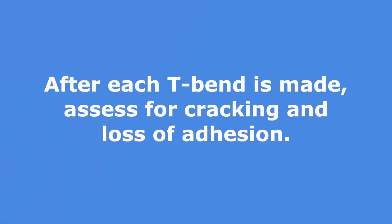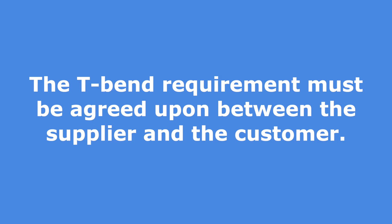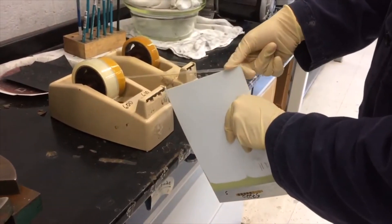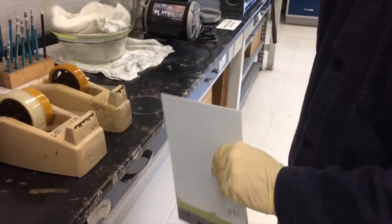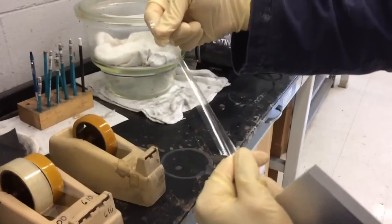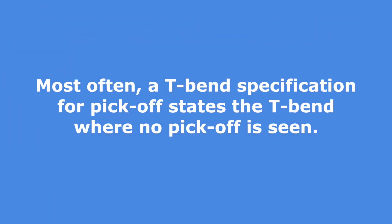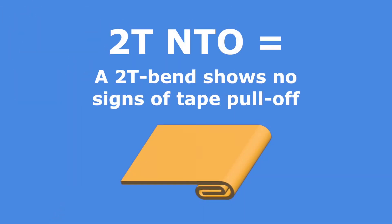After each bend is made, it is common to assess the performance of the coating at each T-bend for cracking and loss of adhesion. The degree of cracking may be observed visually or with the aid of magnification. The T-bend requirement, and whether cracking or adhesion loss is allowed, must be agreed upon between the supplier and the customer. Loss of adhesion, commonly called pick-off in the industry, is assessed by applying pressure-sensitive tape to the bend and then rapidly pulling the tape from the bend. The tape is then inspected for the degree of pick-off. Most often, a T-bend specification for pick-off states the T-bend where no pick-off is seen. In the coil coating industry, terminology such as 2T and T0 is used, which means that a 2T bend will show no signs of tape pull-off.